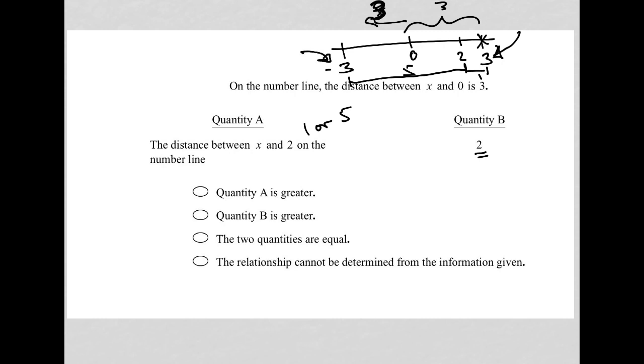We don't know which one it is. There's no information in the question that says that x has to be a positive value. On a number line, you could have both positive and negative values. So, for that reason, I'm going to say the relationship cannot be determined from the given information.